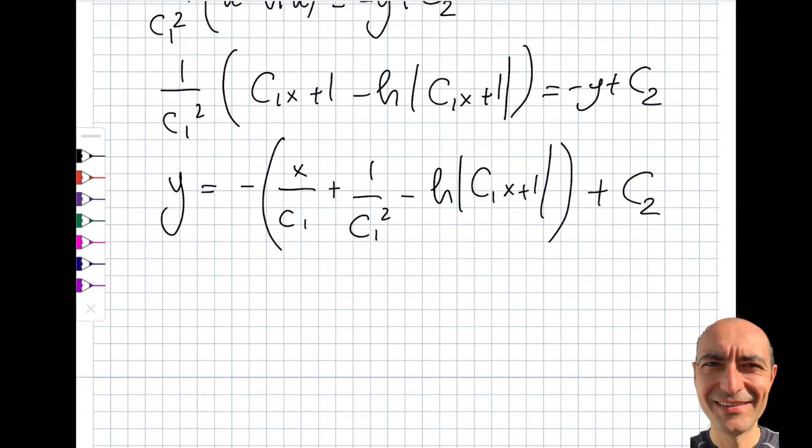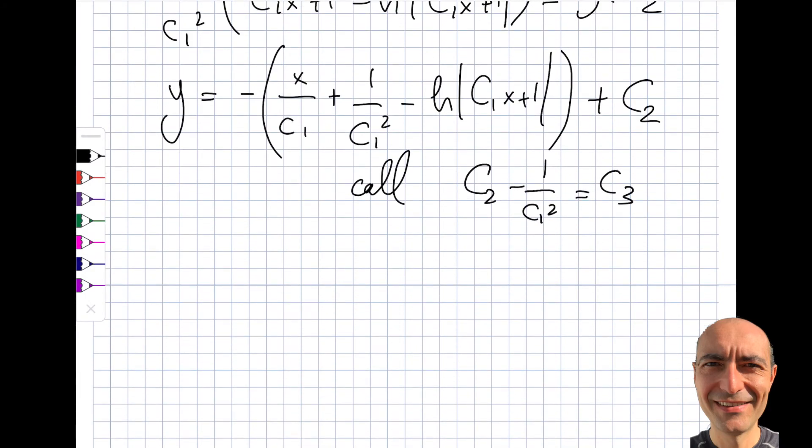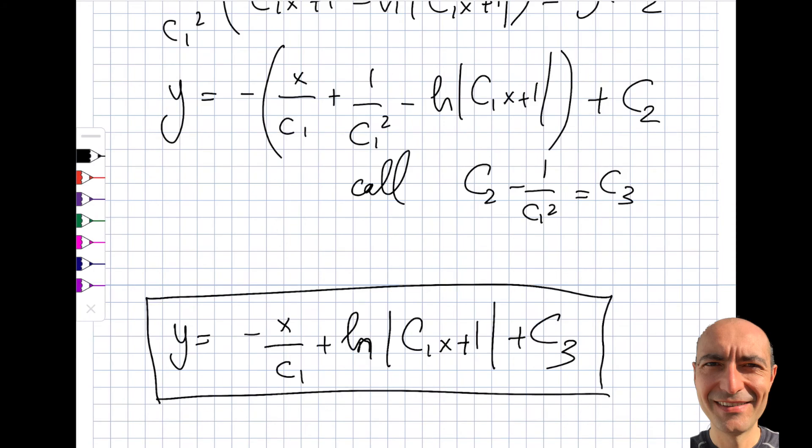See, one thing, do you see this? This, this. Now, minus of that, but that doesn't really matter. So those are like, I'm summing up two arbitrary constants. So I'm going to just call c2 minus 1 by c1 square is equal to c3. At least it looks a little bit better. So then I get myself minus x by c1 plus ln of c1x plus 1, then it becomes plus c3. So you can see that I obtained myself this as the final form of the solution.